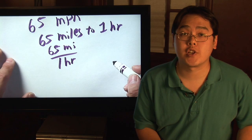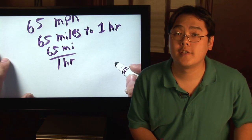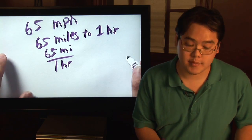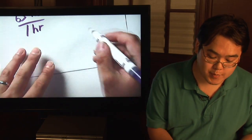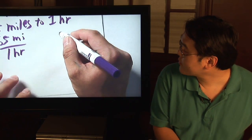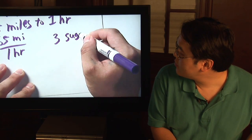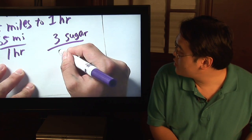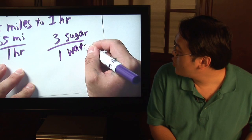Now another illustration is if you were, let's just say, cooking, you have three cups of sugar to one cup of water. Well, that's another example of a unit rate because you have three cups of sugar to one cup of water.